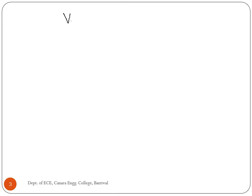The total voltage is the sum of incident and reflected voltage waves vi and vr respectively. Total voltage at port 1: V1 = Vi1 + Vr1. Total voltage at port 2: V2 = Vi2 + Vr2, where Vi2 is the incident voltage at port 2 and Vr2 is the reflected voltage at port 2.